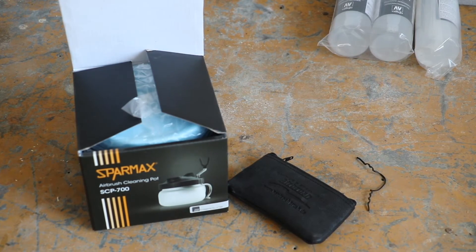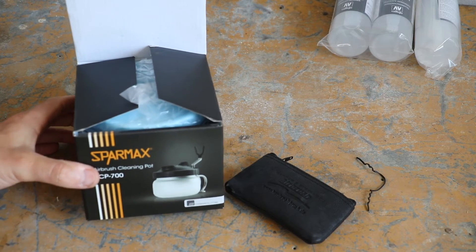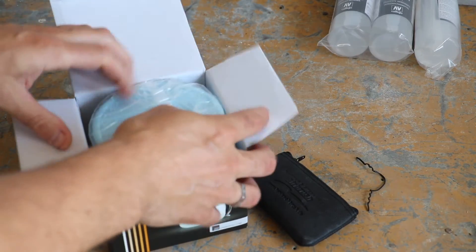Finally for this little intro section showing some of the other bits and pieces that I've bought is the this came with the kit as it happens so this is a cleaning pot.